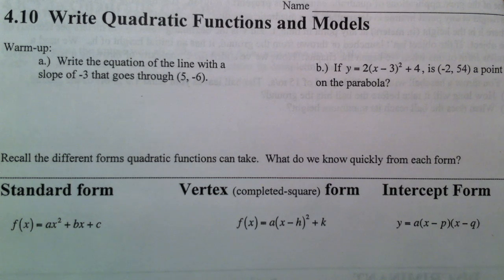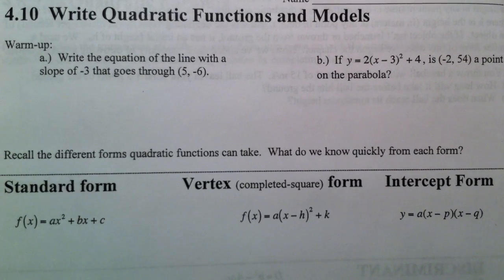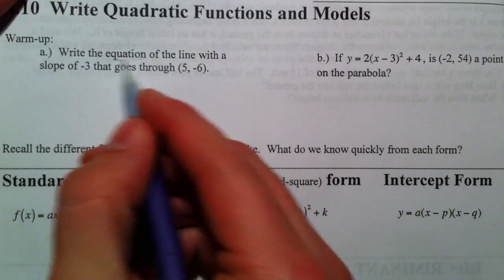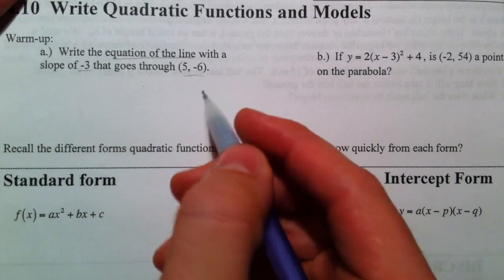Alright, so far we've done everything using equations. Now we're going to go backwards and actually write equations. To know how to do this, I want to remember how we would write the equation of a line if we had a slope and a point.